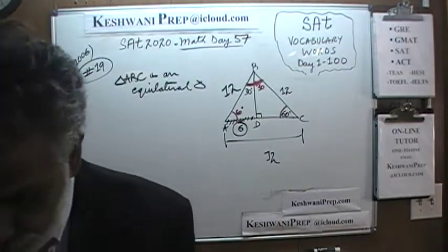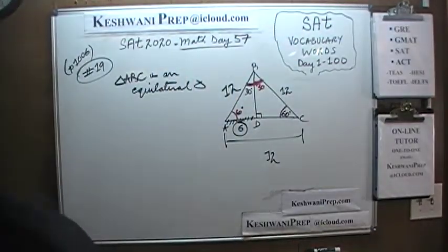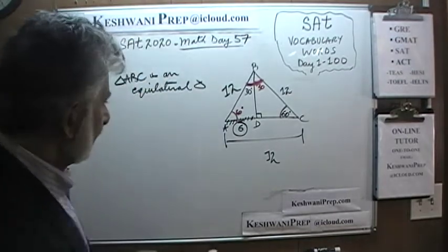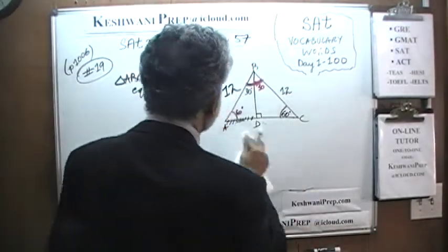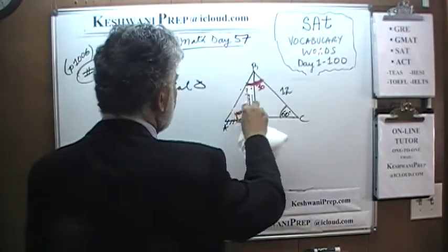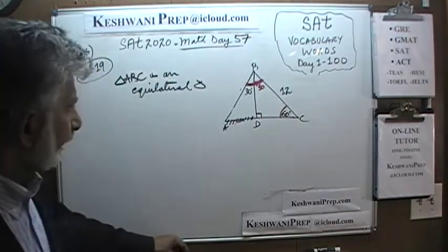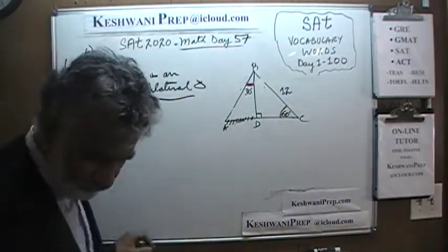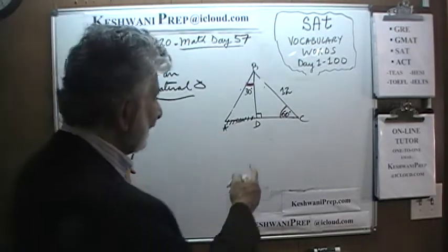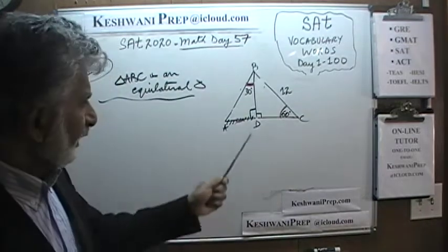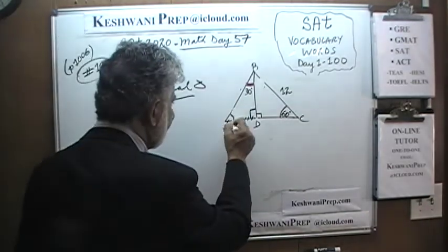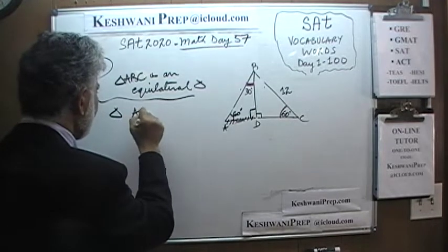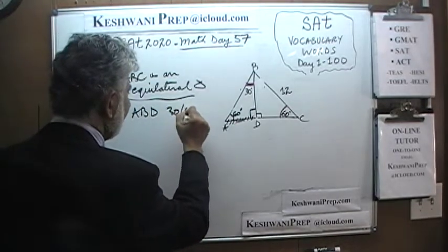Another way is to use the 30-60-90 triangle. This angle is 30 degrees. This angle is 90, which means the adjacent angle must also be 90 because it's a straight line. If this is 90 and this is 30, this has to be 60. So we look at triangle ABD — triangle ABD is a 30-60-90 triangle.